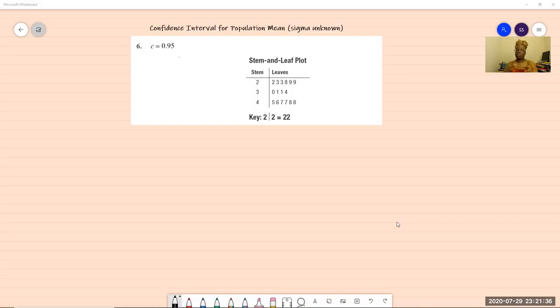So as we look at this problem, we're given a stem and leaf plot. So you should be able to read the stem and leaf plot using the key at the bottom. Two equals 22, 23, 23, 28, 29, 29, et cetera. And up in the left hand corner, you see that it says C, which is your confidence level is going to be 95%, which they changed to 0.95.